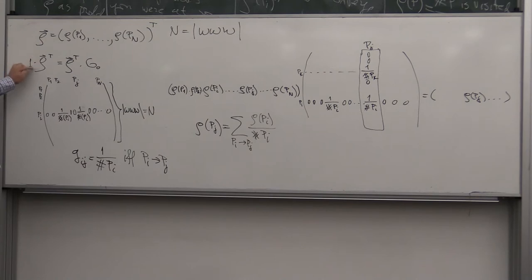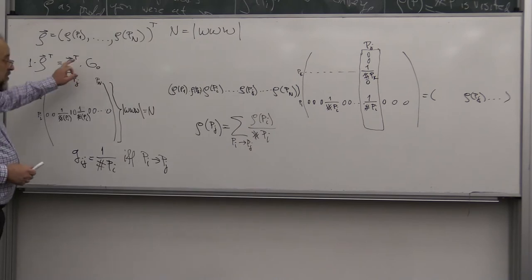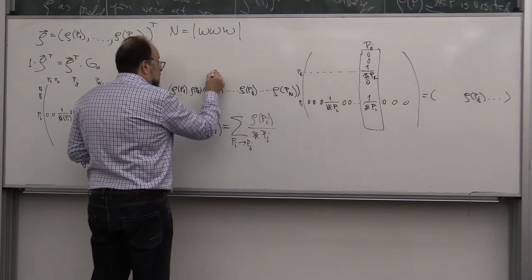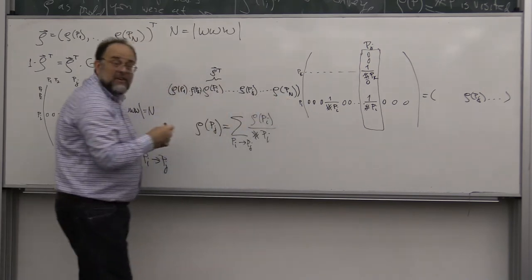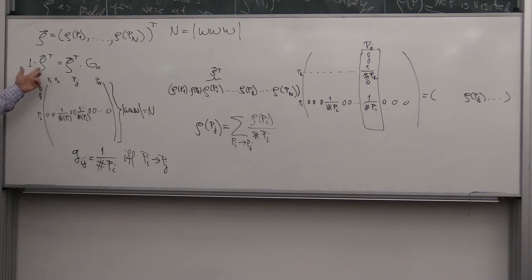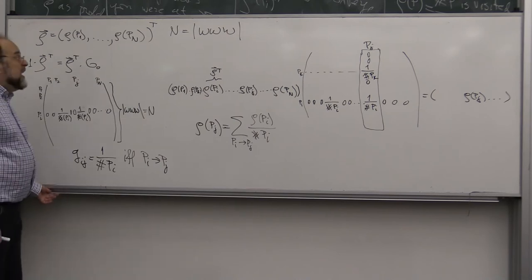But why should 1 be an eigenvalue of G0, and why should it have a unique eigenvector associated with eigenvalue 1? This is obviously not guaranteed by anything we have said so far.